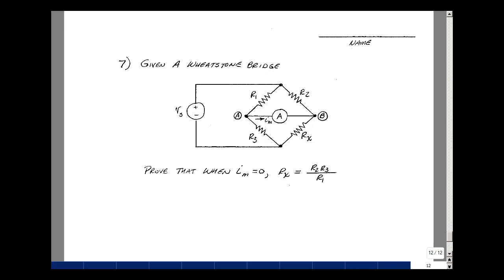And lastly, given the Wheatstone bridge, can you prove that when this current is zero, that the resistor R-sub-x is equal to R2 times R3 divided by R1.